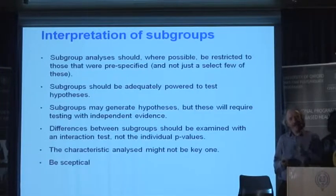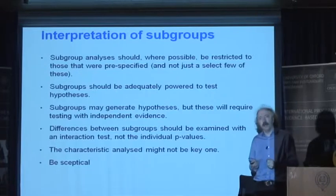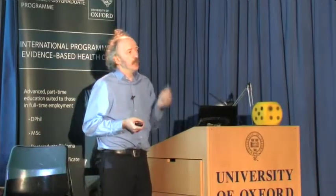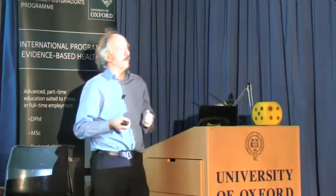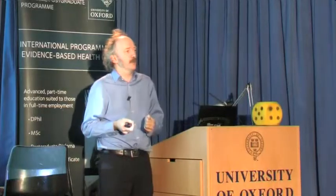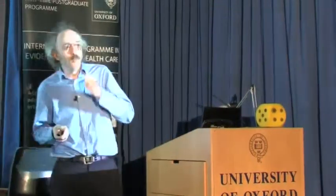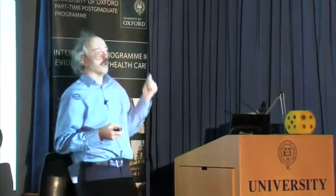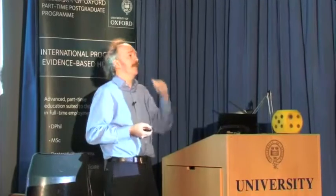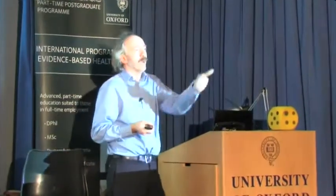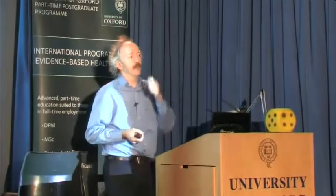We have to recognise that a pre-specified subgroup analysis with a strong rationale from independent evidence should be more believable than a post-hoc subgroup analysis where we fiddled around inside our data, found something that looks interesting, gone to PubMed or somewhere like that, and now appear to have a rationale. Because if you turned it around, you could go to the database and find a rationale in the opposite direction.